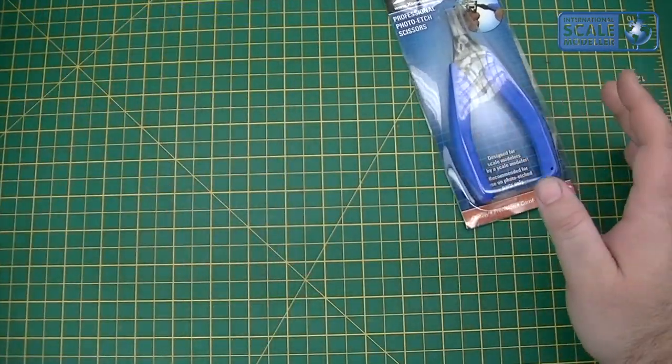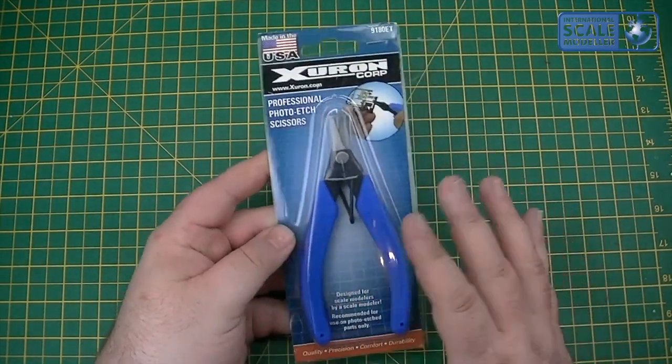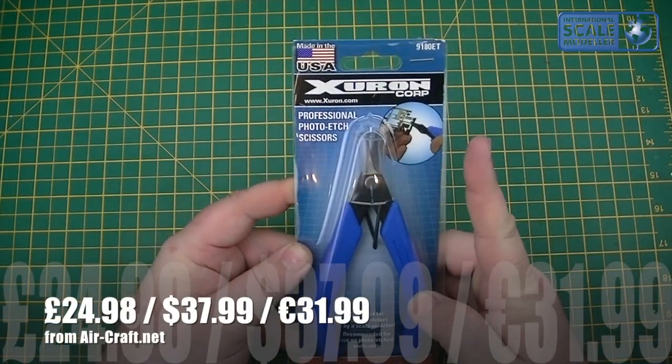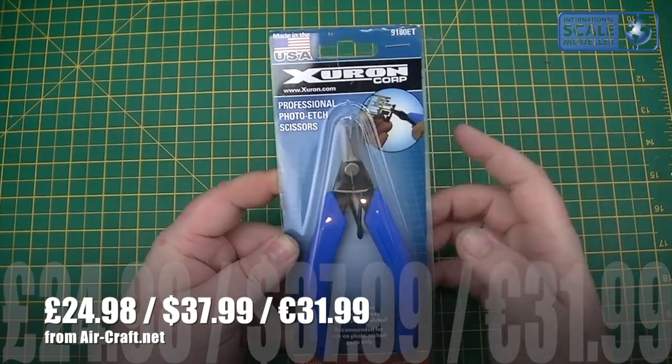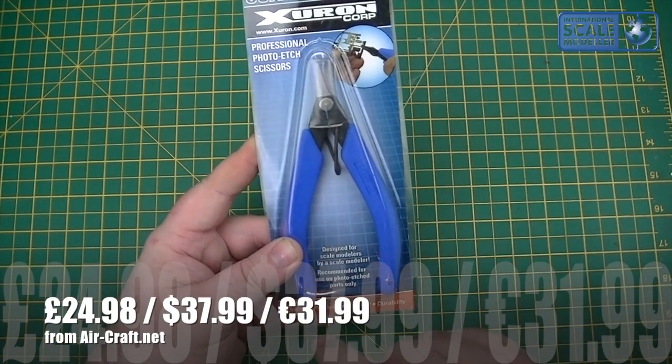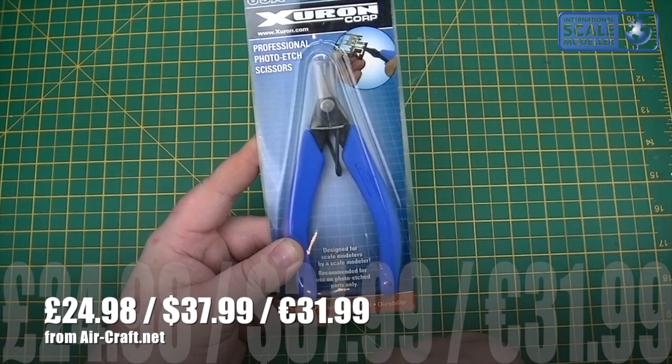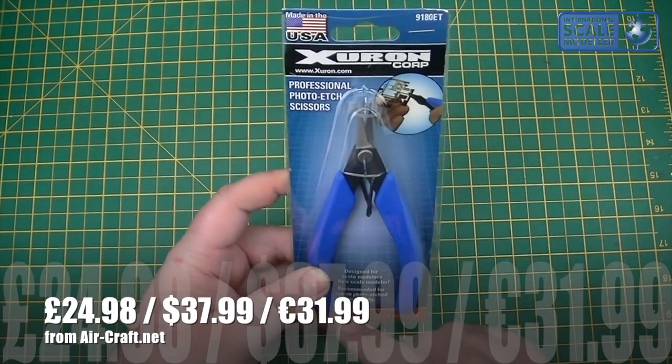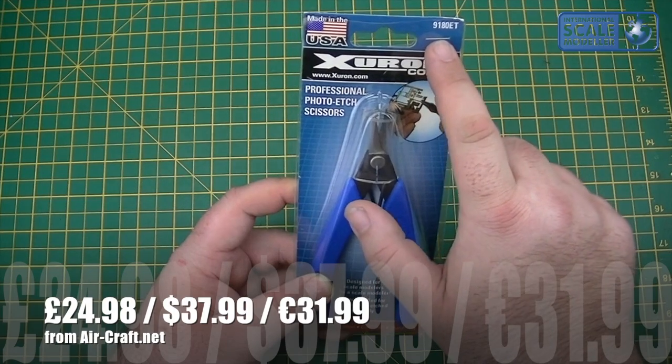We'll start off with the photo etch shears. Standard packaging, blister packing, with a protective piece of tubing on each cutter so they're not going to poke through the plastic. A little bit of information on the front: designed by scale modelers, recommended for photo etch parts only, and the code is 9180ET.